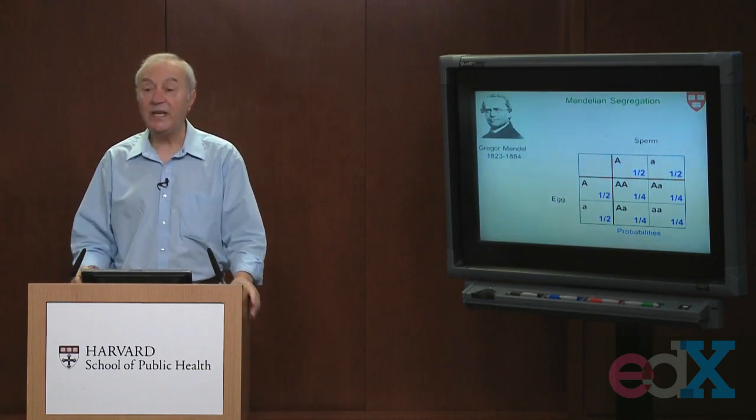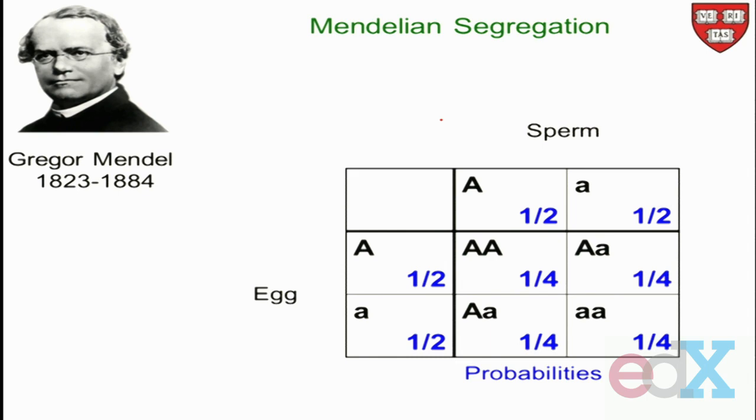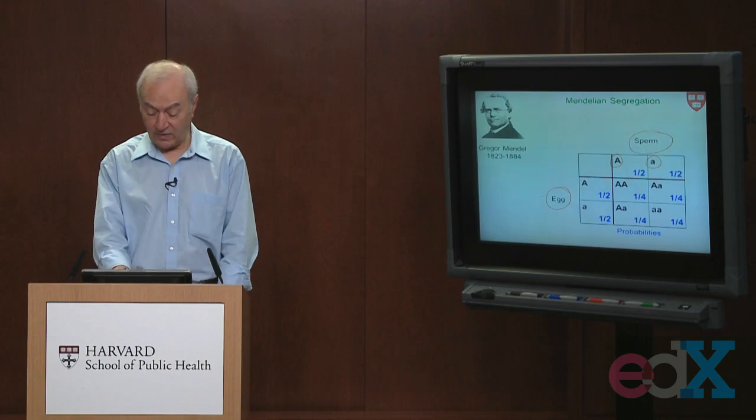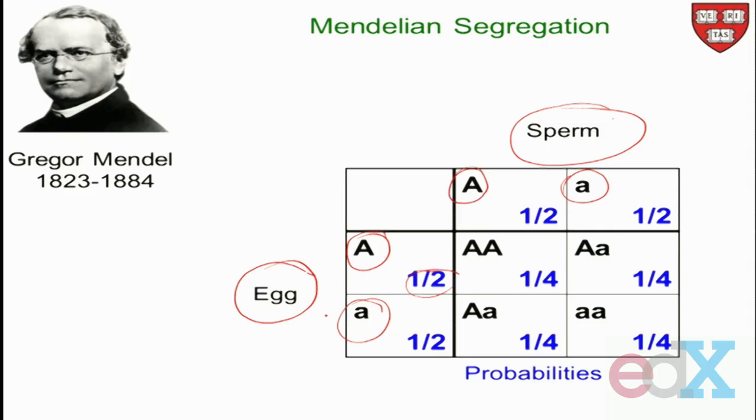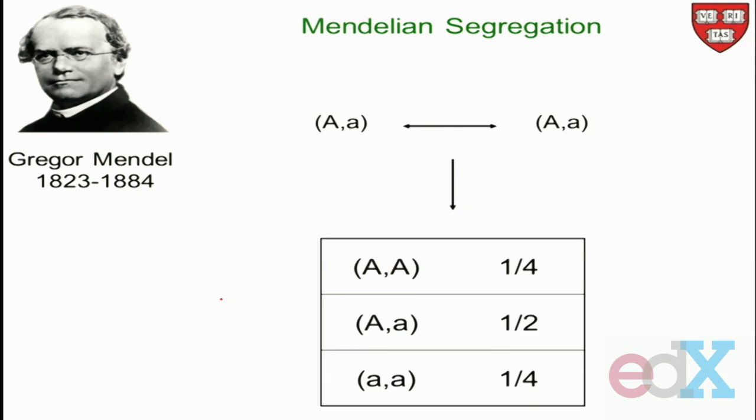So here we have two actions going on. First, with the sperm, we can spin a coin there to see which one of the capital A or the little a gets attached to the egg. And at the egg side, we spin a coin there too with probability half to see whether the sperm will attach to the capital A or little a. This is like saying, decide here first with one spin of the coin and then decide there with another spin of the coin.